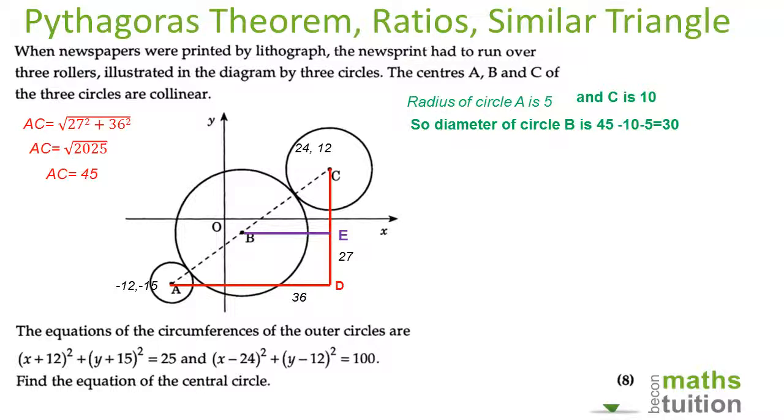Now we've got two triangles here: triangle CBE, small triangle, and triangle CAD. Both are similar because BE is parallel to AD is parallel to the x-axis, so that's 90 and that's 90 and that's 90.